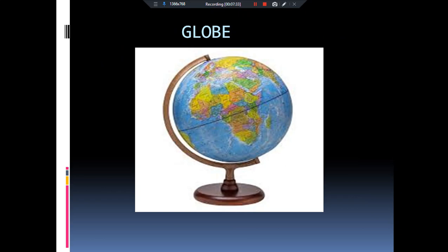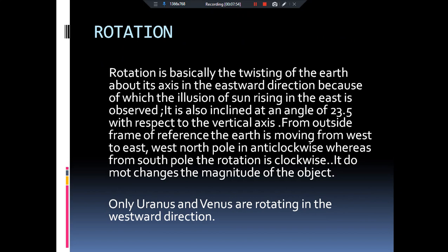You can see on this globe how the north pole and south pole are fixed with the help of needles. Similarly, our earth is also fixed with two imaginary needles. Just as this globe can rotate in the east and west direction, our earth is rotating in the eastward direction. There is an imaginary vertical axis passing through the center of the earth, and about it our earth rotates. It takes 24 hours for the earth to complete one rotation, and this is known as rotation.